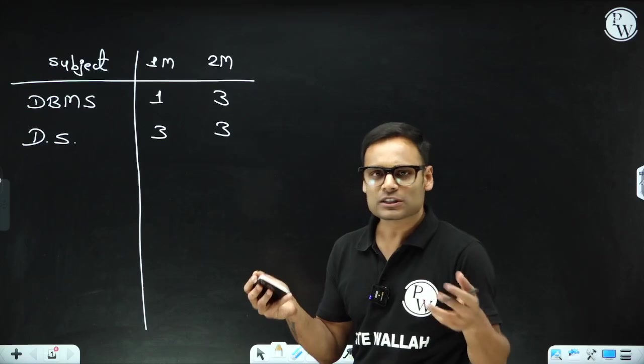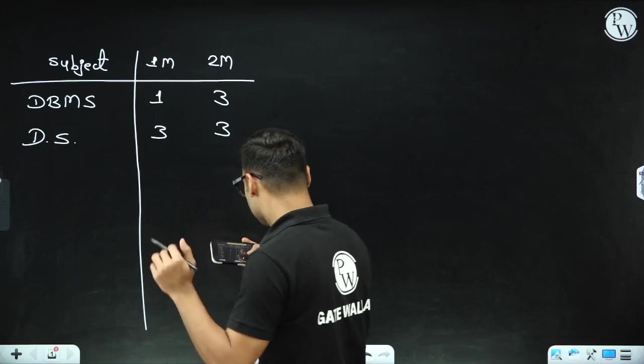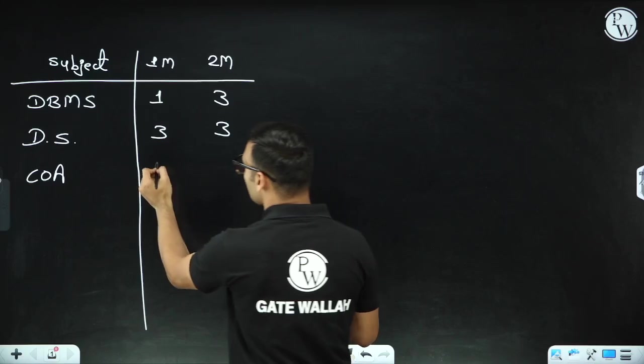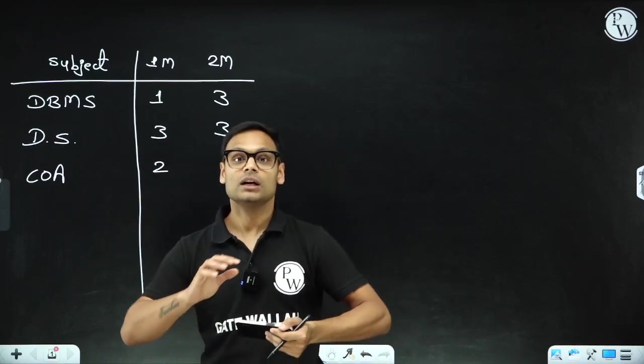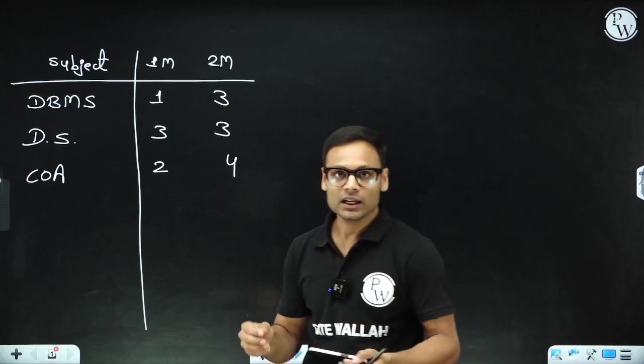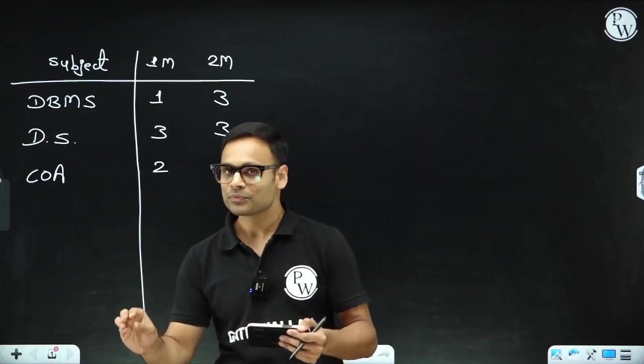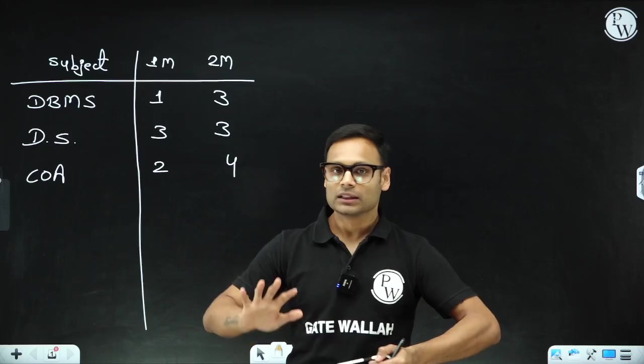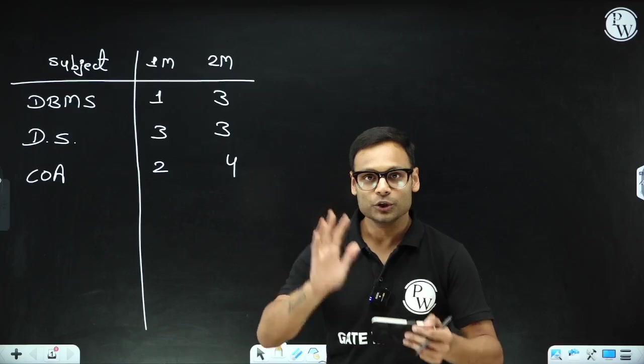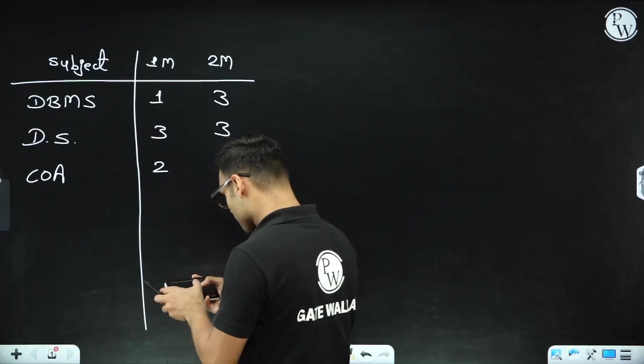Programming, Data Structures, and Algorithms combined - total 10 to 12 questions they usually ask, and it has been seen this year also. COA was very easy this year. All questions were from the discussed topics only. If you have attempted all the classes, all the DPPs and practice sheets, then nothing is out of it at all. Everything was from the classes only, nothing outside the class.